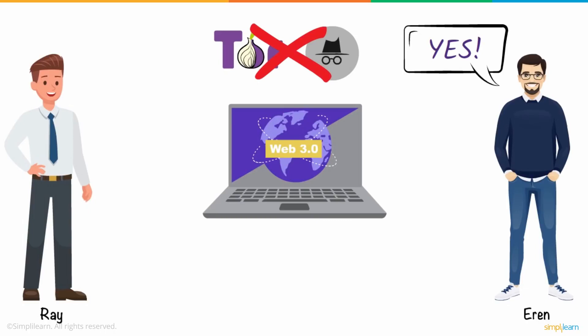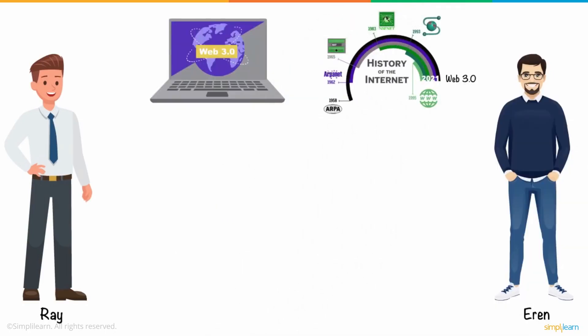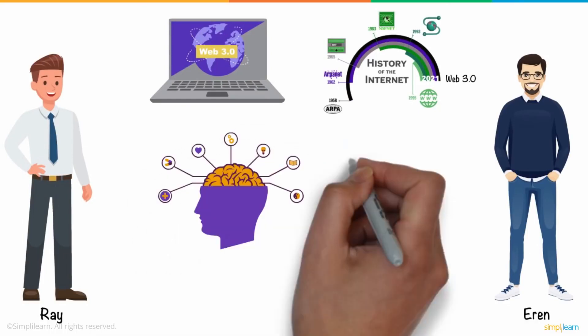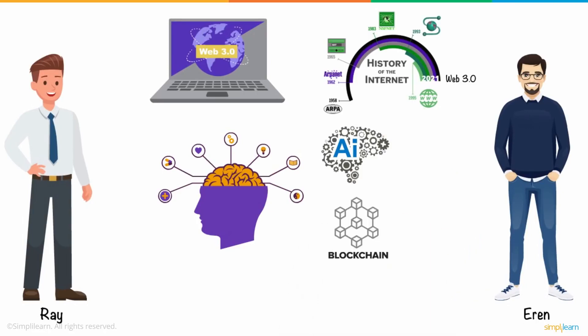Ray was curious about it and asked, what is Web 3.0? Aaron explained that Web 3.0 is the next step in the evolution of the internet, allowing it to process data with near-human intelligence through the use of artificial intelligence and blockchain technologies that run innovative programs to help users by providing them with their relevant choices.